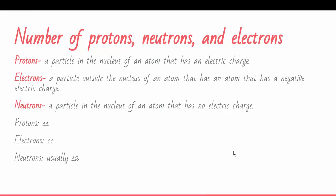Number of protons, neutrons, and electrons. A proton is a particle in the nucleus of an atom that has an electric charge. Electrons are a particle outside the nucleus of an atom that has a negative electric charge. Neutrons are a particle in the nucleus of an atom that has no electric charge.